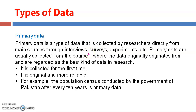Primary data is usually collected from the source where the data originally originates from, and it is regarded as the best kind of data in research. Primary data is collected from the original source for the first time. It is original and more reliable because it's original, so you can trust this data.